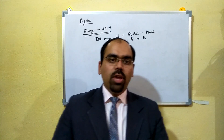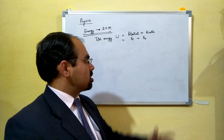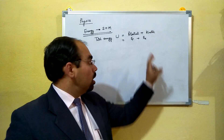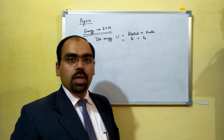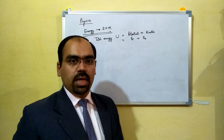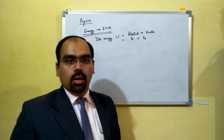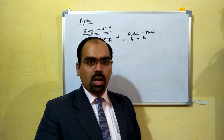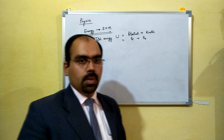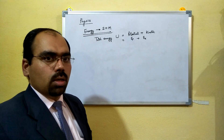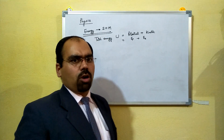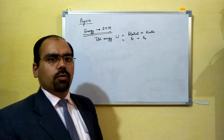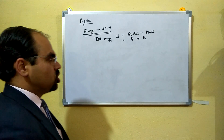We have to derive firstly the values of EP and EK so that we can get the total energy of simple harmonic motion. For our ease, we are going to derive the value of kinetic energy first.